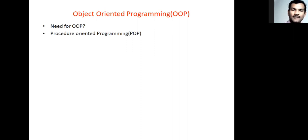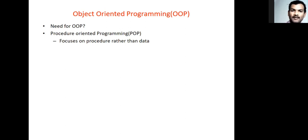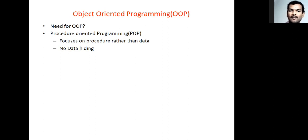These are some of the limitations of procedure oriented programming. In procedure oriented programming, the main emphasis is given to the procedure rather than the data. In languages like C, if you take any problem and are asked to solve it, the main focus is dividing the problem into sub-problems, and the focus is on the process of how we are solving it — we are not bothering about the data. Another limitation is that anybody can access all parts of the data; there is no restriction on the data.